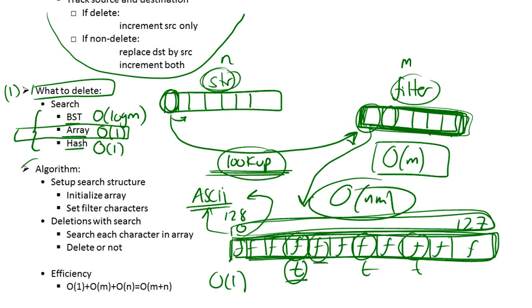So this is the algorithm in the end. The algorithm will be as follows. The first thing we do is we set up the search structure that I talked about right here, so that we can optimize our search. And I initialize the array to all false. So it will be Boolean values inside each of these cells. And then for every single character in the filter, I will set its corresponding character using a big O of one operation to find it. Its corresponding cell, I will set it to true.